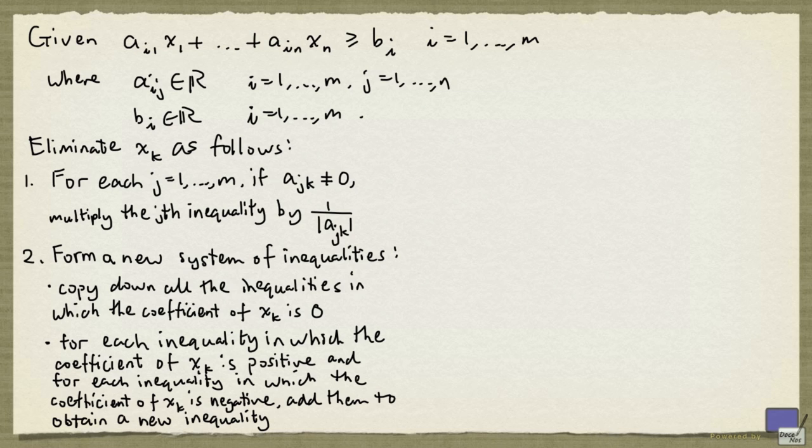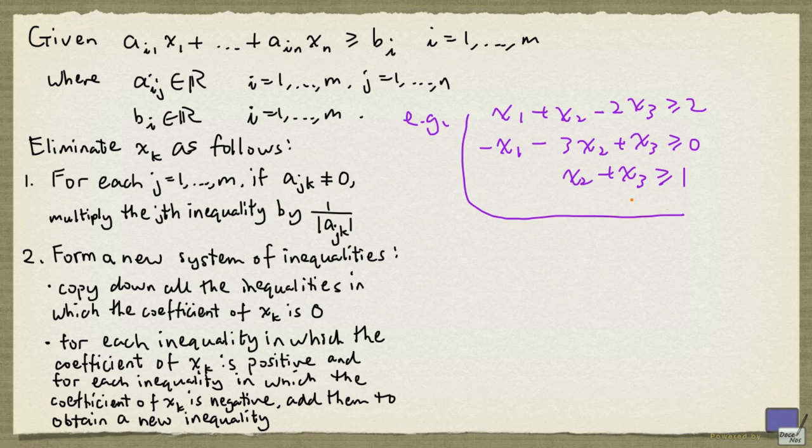So let's look at an example to see how this works. Say we want to determine if this system has a solution x1, x2, x3. Let's label these inequalities 1, 2, and 3.